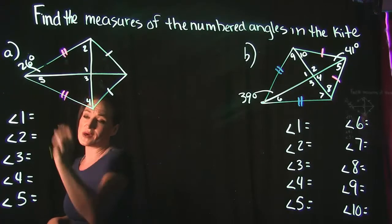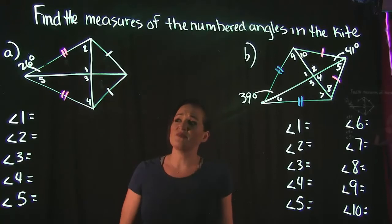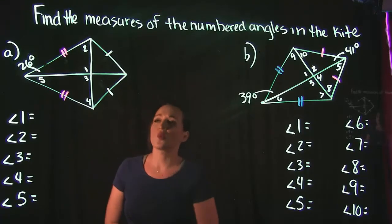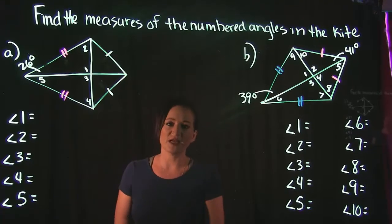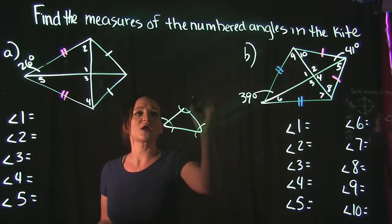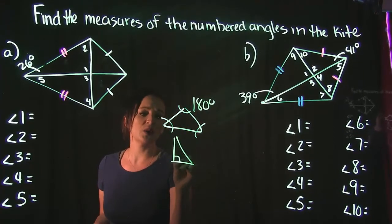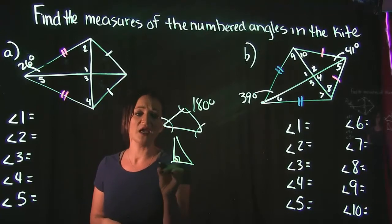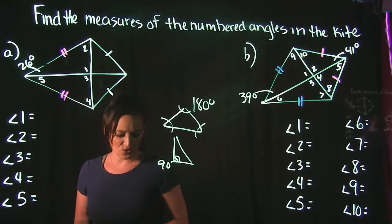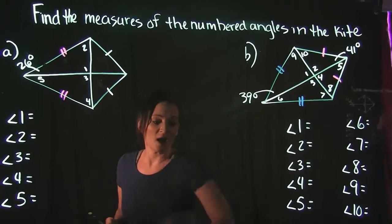Looking at example A, we're only given that one angle is 26°, and we need to find angles 1 through 5 — a lot of missing information. But this is very doable. We're only going to use basic triangle rules: all three angles of a triangle equal 180°, and a right angle equals 90°. Just these two facts will help us find all the missing pieces.